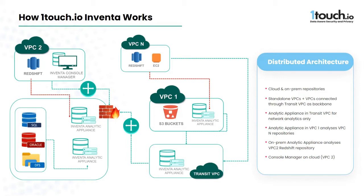Additionally, Inventa is an extensible Docker container-based solution designed to scale out to wherever you may need to discover data. There are two components to the solution: a set of deployable sensors that connect to repositories via client connections, and a console manager where metadata about discovered data is organized and displayed.